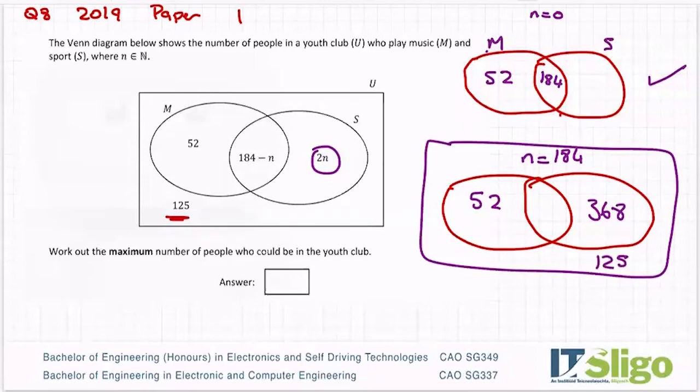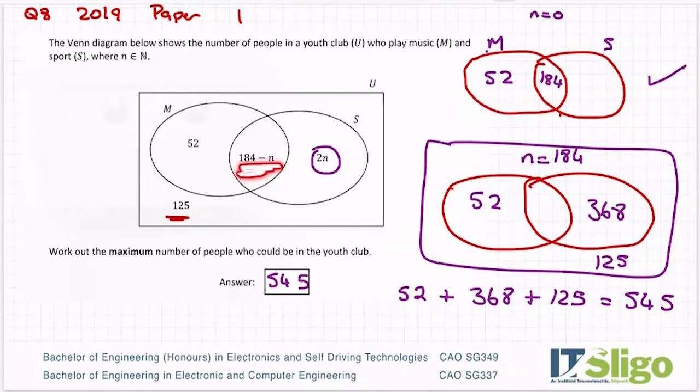I would argue then that the maximum number of people who could be in the youth club is 52 plus 368 plus the 125 that's on the outside. Let me just add them up, and I get 545 people in the youth club. Just to recap, the two extremes would be when you have the smallest number possible in here and when you have the largest number possible in here. That's when N is 184 or when N is 0.